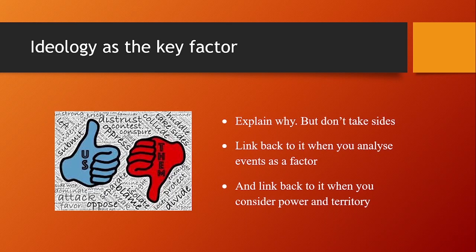Rather than just explaining their differences — and try not to take sides, making one ideology a force for good and one a force for evil — try to show how they simply could not work together. This is why their mutual mistrust is so closely linked, and it also links to the acquisition of territory and the notion of power. I know they came to tolerate each other post-Stalin with Khrushchev's peaceful coexistence and later in the thaw of the 1970s, but these were pragmatic in nature; the underlying themes of mistrust and rivalry, if not downright hostility, never really went away.